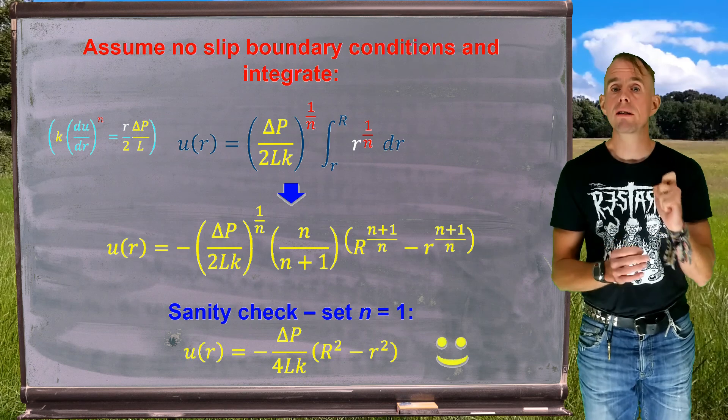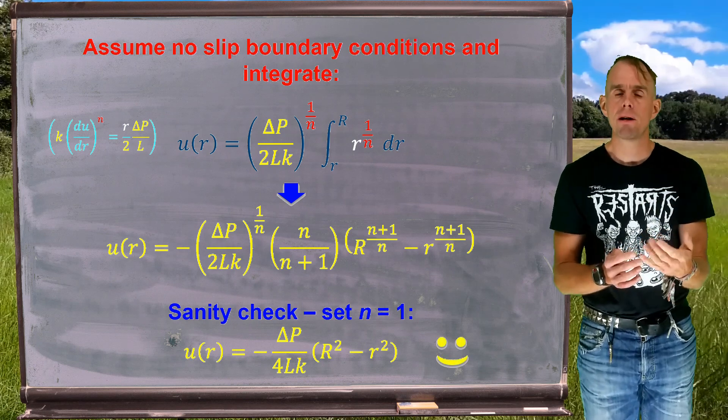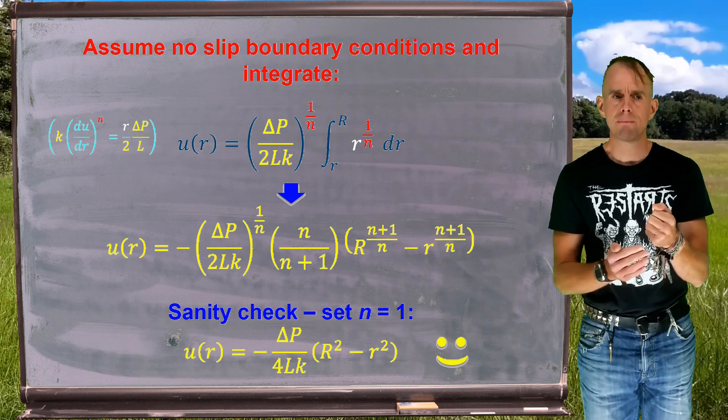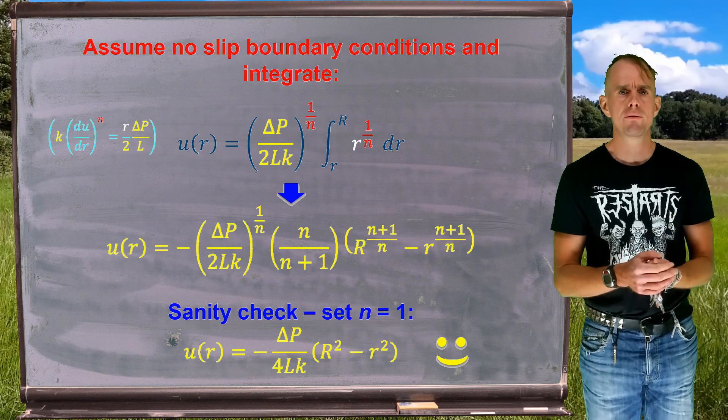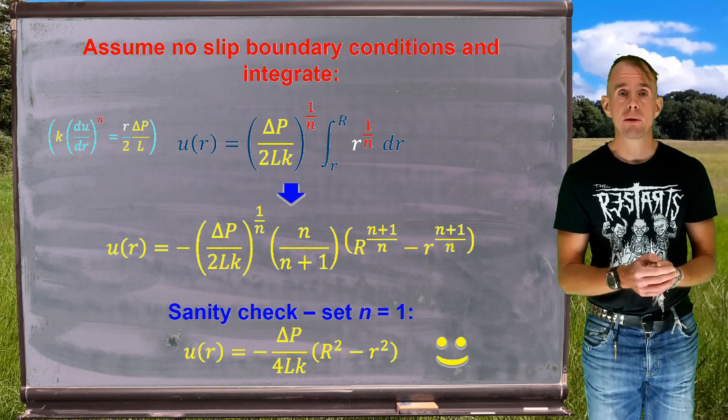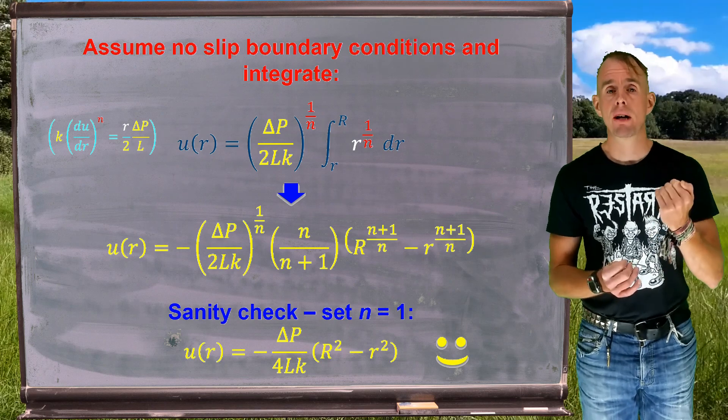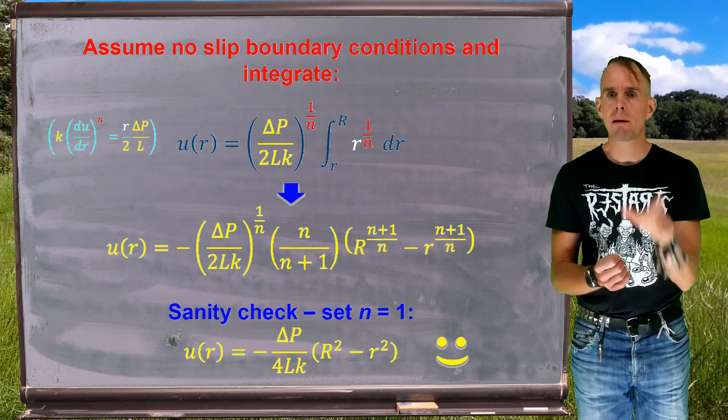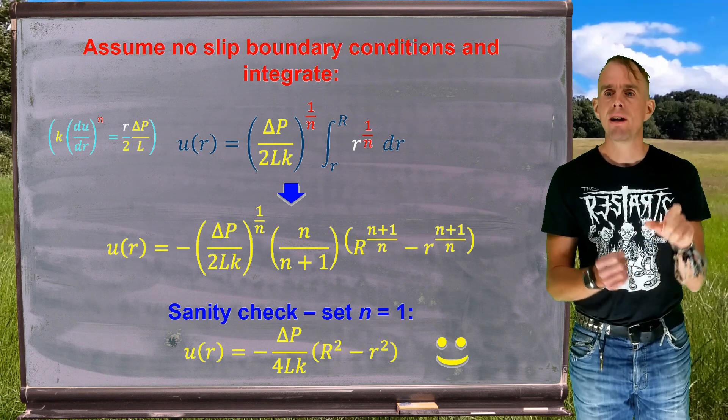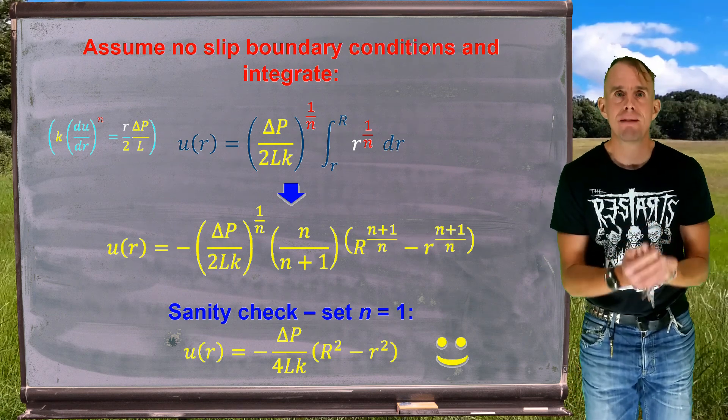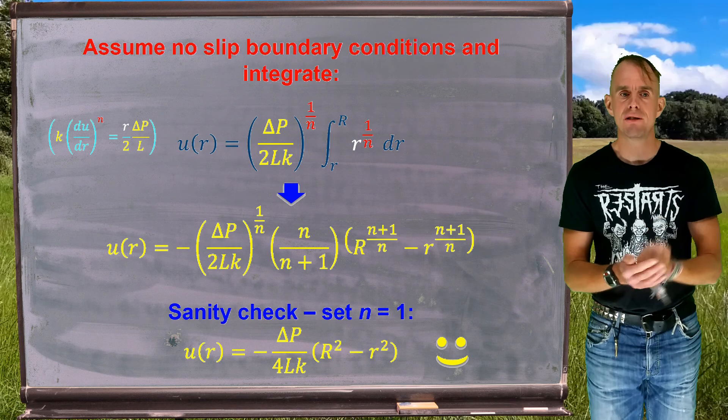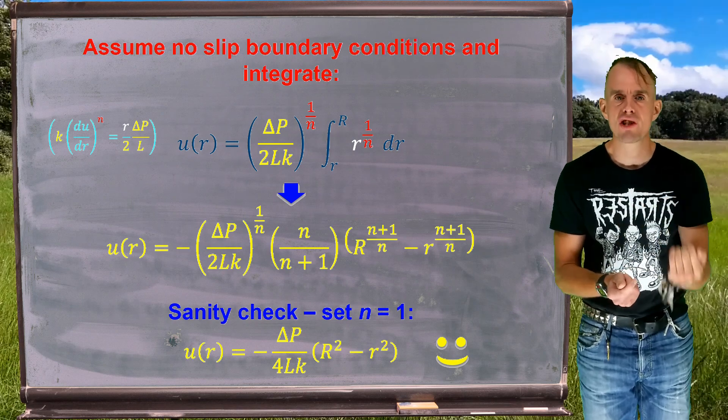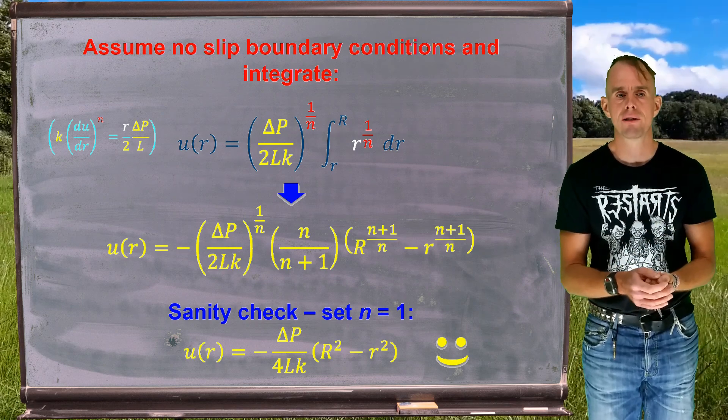So the one thing I'd like you to start thinking about now is whenever you have an expression using a generalized Newtonian fluid, a viscoplastic fluid, and even the more complex viscoelastic fluids, there will be ways to set certain parameters equal to certain values that will yield you a familiar result, usually the Newtonian. Do that as a check just to make sure that you've got things right.